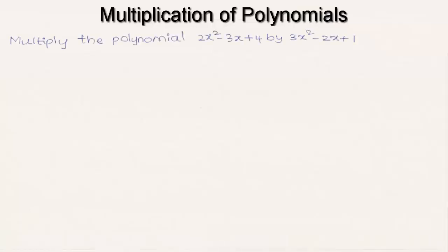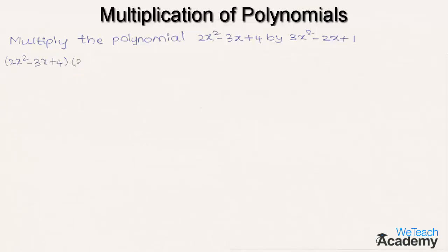We have here: multiply the polynomial 2x² minus 3x plus 4 by 3x² minus 2x plus 1. So let us write the given polynomials as (2x² minus 3x plus 4) into (3x² minus 2x plus 1).